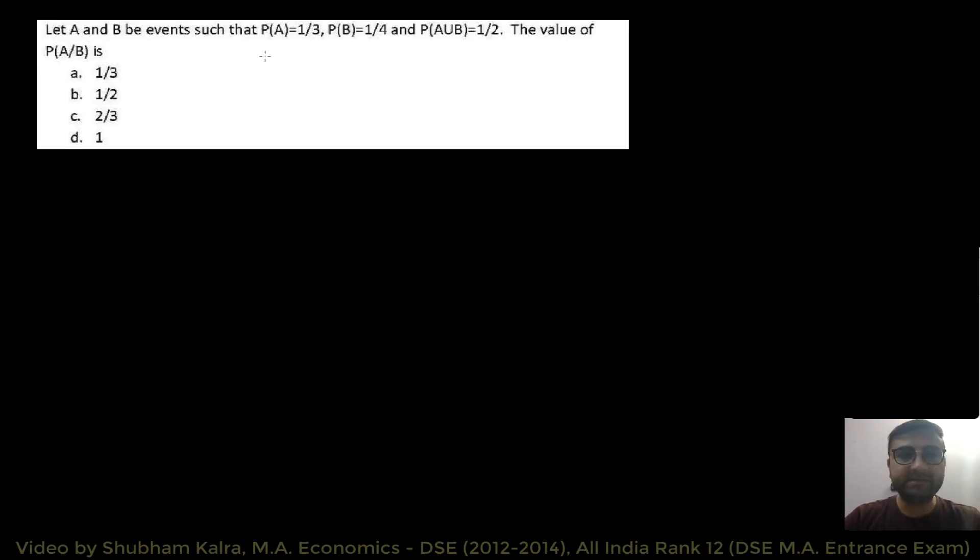Let A and B be events such that probability of A is this, probability of B is this, and probability of A union B is this. We have to find the value of probability of A given B. Well, this is quite straightforward. We already know the formula.